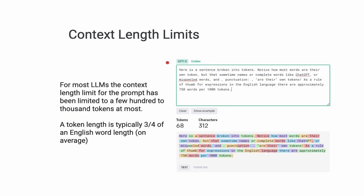If you look at the text on the right-hand side, the context for GPT-3 has a limitation, and it comes back with 68 tokens. A token is roughly three-fourths of a normal English word — so this text has come back with 68 tokens, including commas, punctuation, and even numbers. When you have a limit like that, you cannot send too much information as context into an LLM.